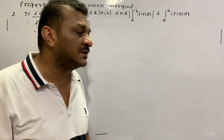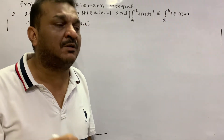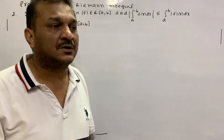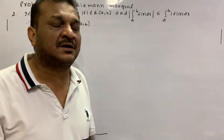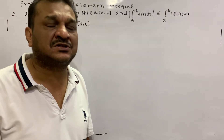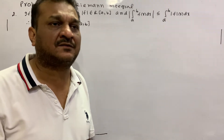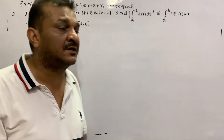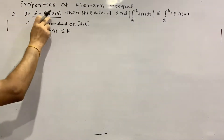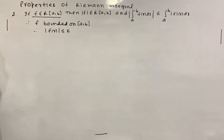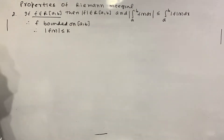When we have a Riemann integrable condition, it is necessary that the function is bounded. After that, the necessary condition for the proof is that U(P, F) minus L(P, F) is less than epsilon. So a Riemann integrable function is necessarily bounded. Now we have to prove |F| is also Riemann integrable.